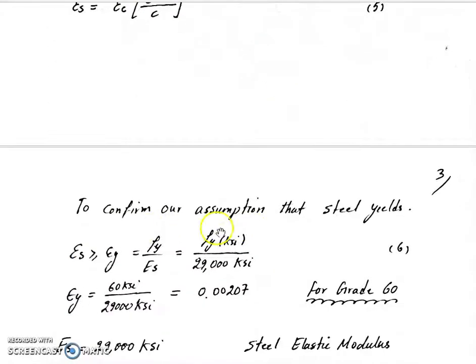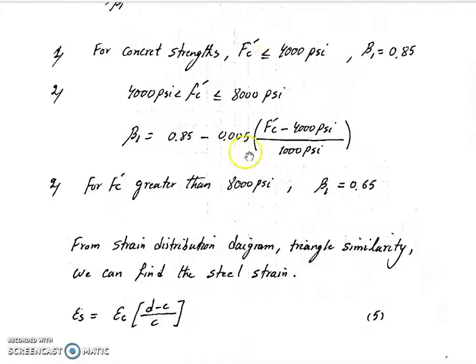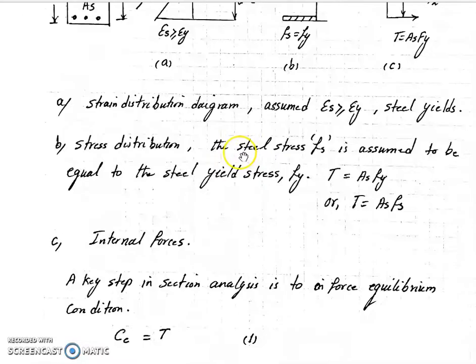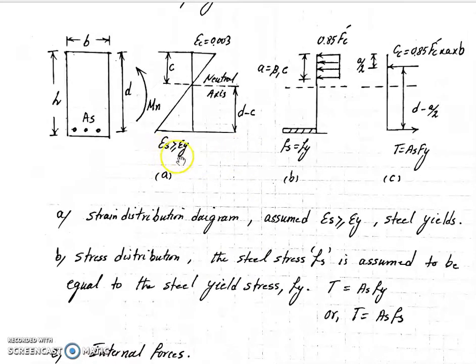To confirm our assumption that steel yields - we already mentioned that in our strain distribution diagram - we assume that steel yields. That has to be greater than or equal to epsilon y, the yield strain of the steel.